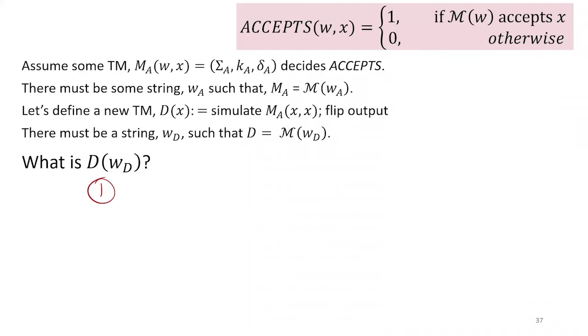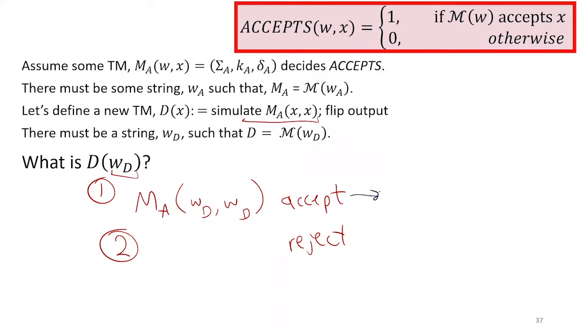What this part does, right? So either simulating MA on W, WD, that can either accept or it can reject. We should flip the result.